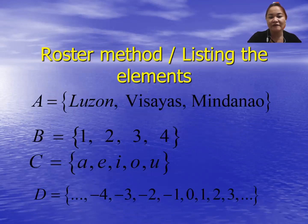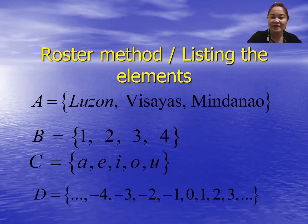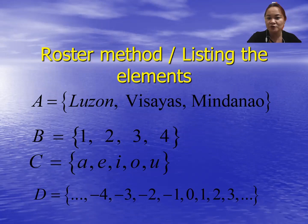First, we have the roster method, or listing the elements. For example, A is the set of major island divisions in the Philippines. The elements are enclosed in braces and separated by commas: Luzon, Visayas, Mindanao — close brace.